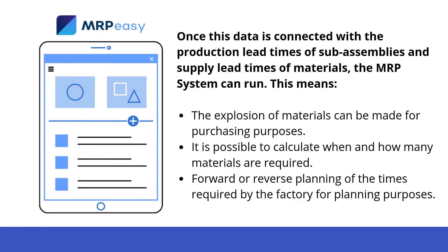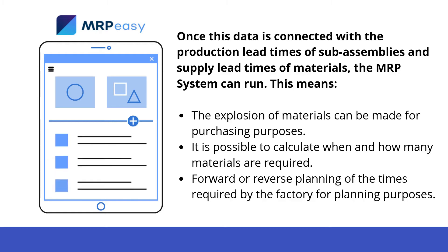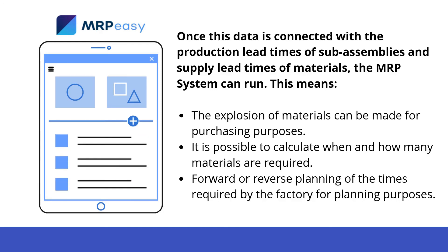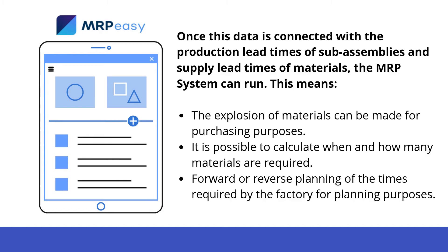Once the data is connected with the production lead times of subassemblies and supply lead times of materials, the MRP system can run. This means the explosion of materials can be made for purchasing purposes — it is possible to calculate when and how many materials are required. Forward or reverse planning of the times required by the factory is supported, and you will be able to manage your purchasing orders with just one click: suppliers, prices, delivery times — everything will be there.